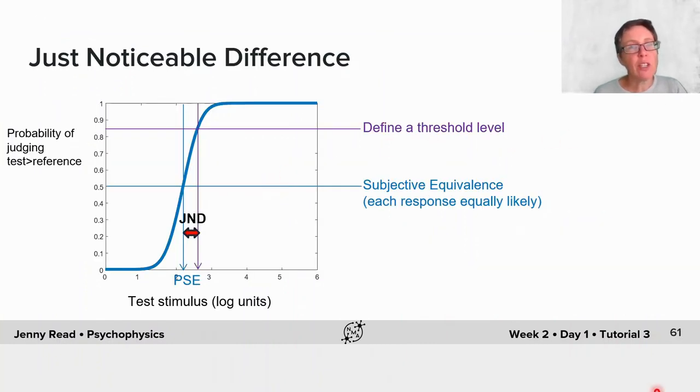To measure the JND in a psychometric function like this, you start off with the PSE, the point where the subject's at 50%. You define your threshold level, so that might be 75%, it might be 84%. Then the JND is the distance that you have to go from the PSE in order to reach that threshold performance.